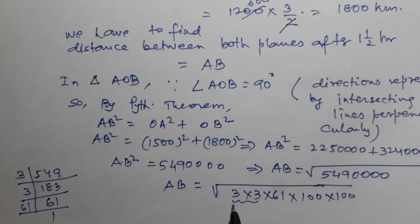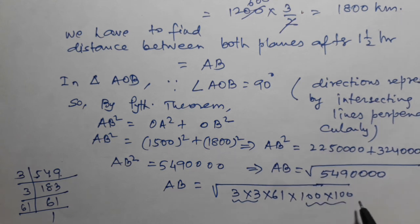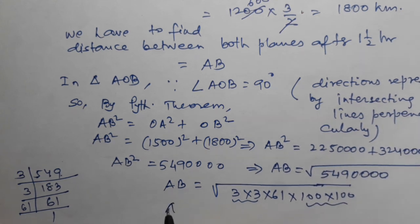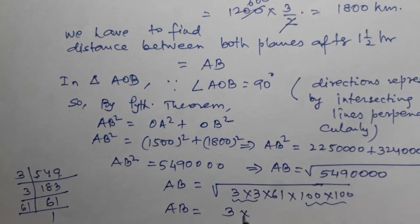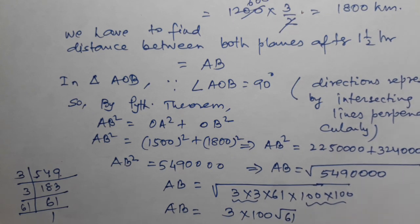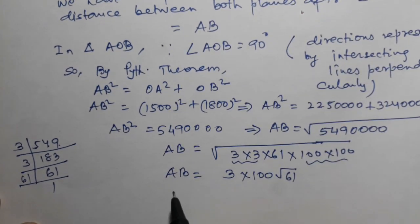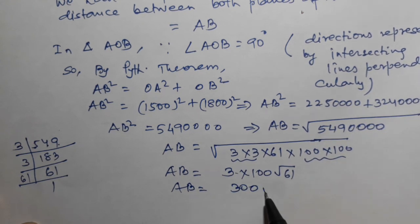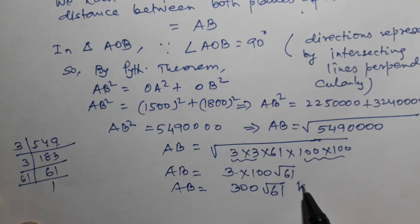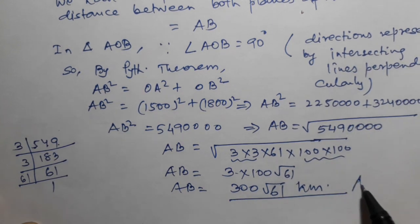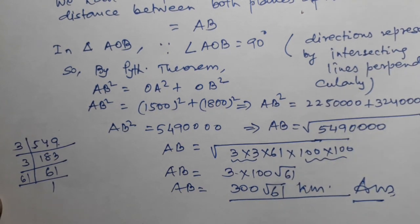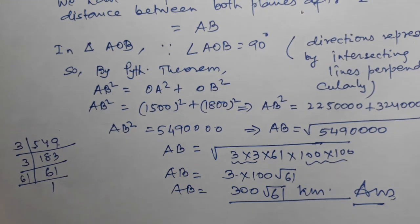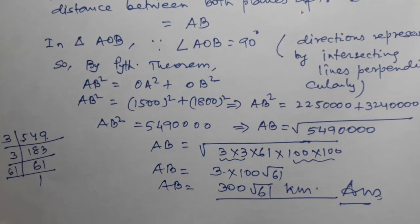So AB = √5490000. We do prime factorization of 549: 549 = 3 × 3 × 61, and 10000 = 100 × 100. Taking square roots: AB = 3 × 100 × √61 = 300√61 km. This is the answer — the distance between the two planes. If you liked it, please like and subscribe. Thanks.